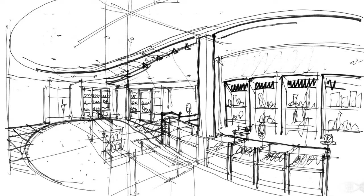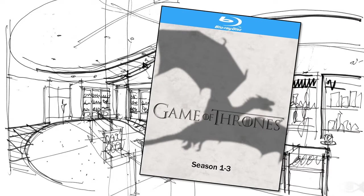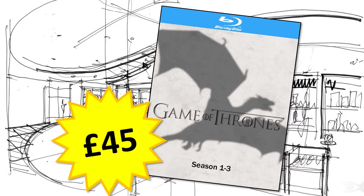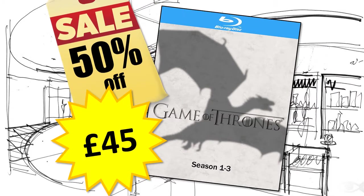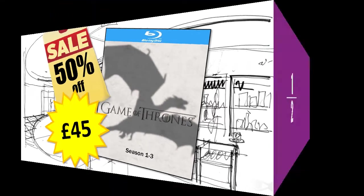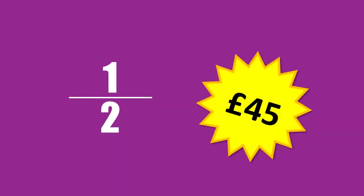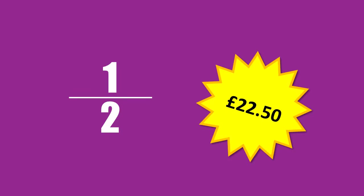So how does knowing this help you work out how much you'll save if something costs forty-five pounds and has fifty percent off? Another way to work this out is to look at the fraction. Fifty percent is the same as a half, and you can work out the saving by dividing the price by the bottom number of the fraction and then multiplying by the number on the top. So forty-five pounds divided by two is twenty-two pounds fifty — times this by one and it's still twenty-two pounds fifty, so that's your answer.